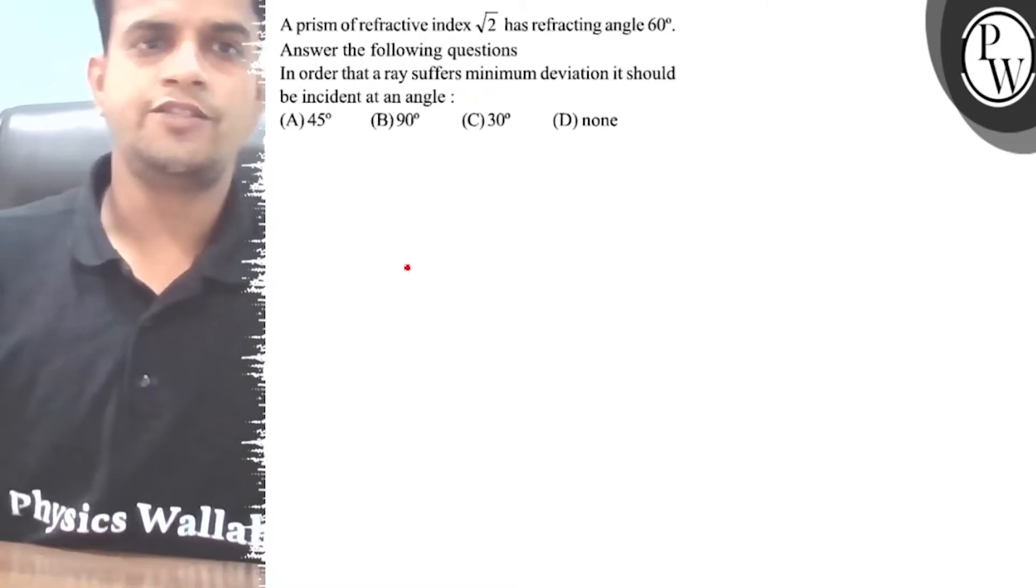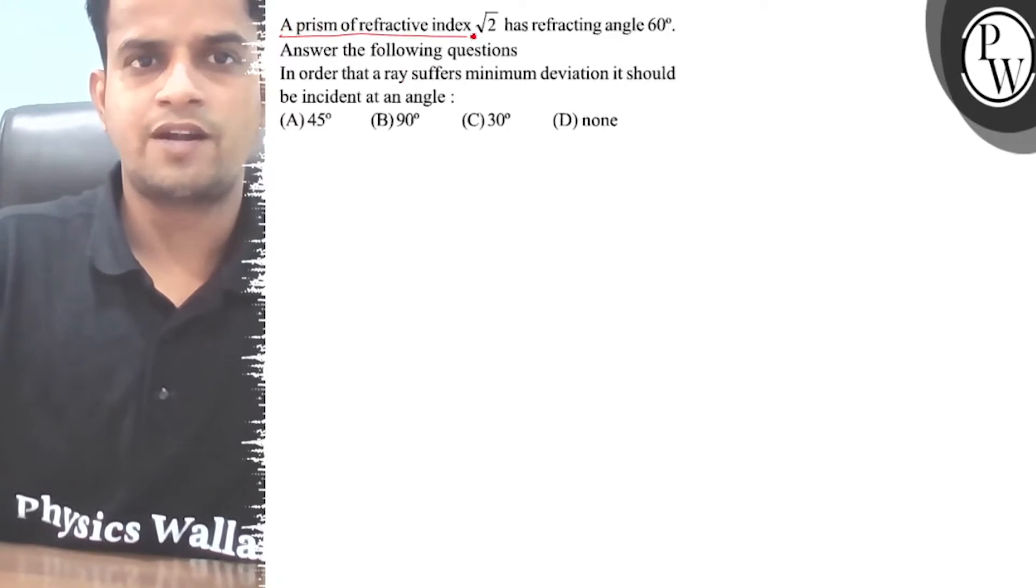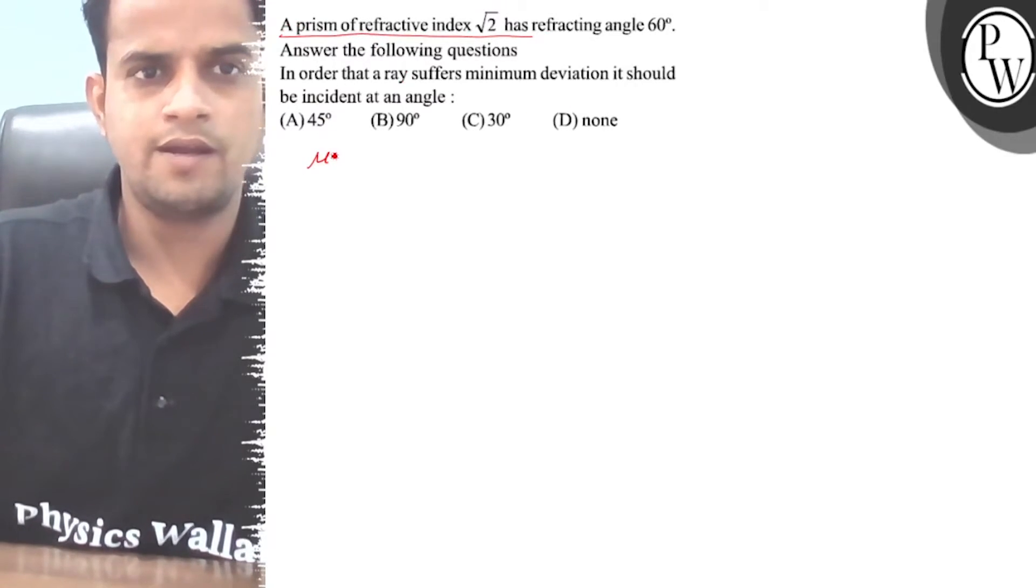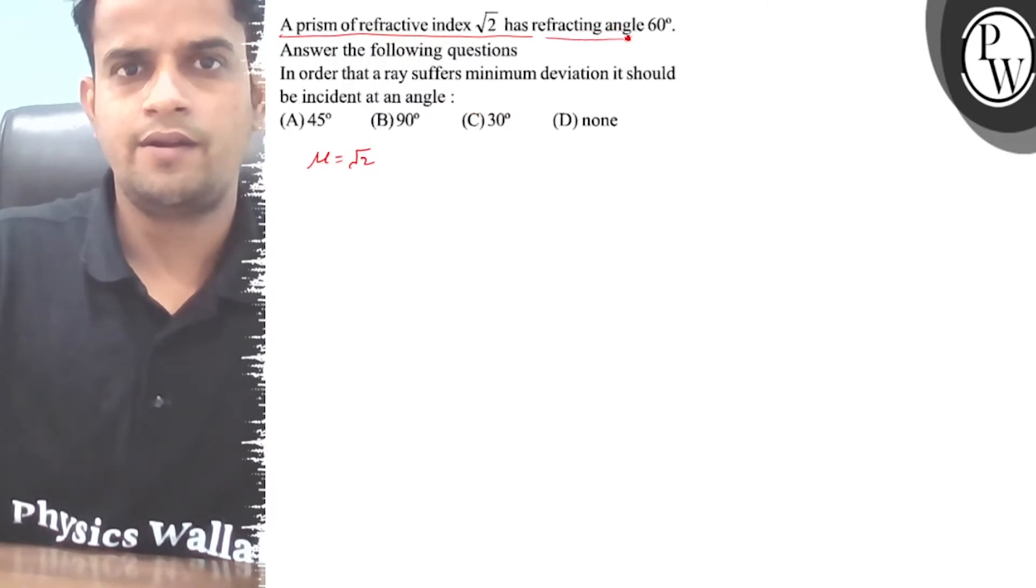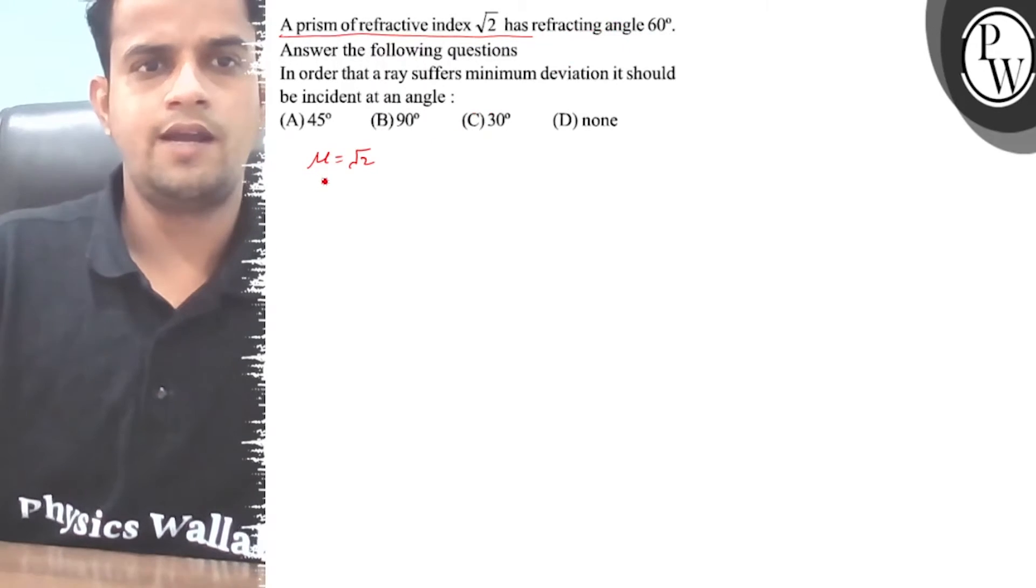Hello, let's consider this question. A prism of refractive index root 2 has a reflecting angle of 60 degrees. Answer the following question.